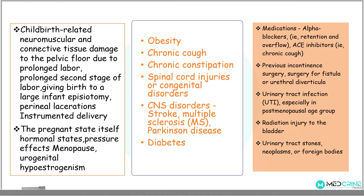Other factors include obesity, chronic cough, chronic constipation, spinal cord injuries or congenital spinal cord disorders, central nervous system disorders such as multiple sclerosis and Parkinson's disease, and metabolic problems such as diabetes mellitus, which is the most common. Some medications can cause urinary incontinence, for example, alpha blockers — which cause retention and overflow — and ACE inhibitors, which are associated with chronic cough. A history of previous incontinence surgery, fistula repair, urethral diverticular surgery, urinary tract infections especially in postmenopausal women, radiation injury to the bladder, urinary tract stones, neoplasms, or foreign bodies can also be associated with urinary incontinence.